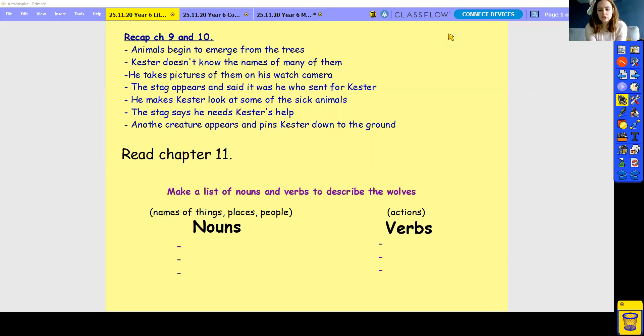So we're gonna have a look at chapter 11 today. As I'm reading today what you need to be doing is you need to be having a look for any nouns and verbs to describe the wolves. As I'm going I'll be describing some characters and some wolf characters. You need to write down any nouns, any names of things or places of people, and then a list of any verbs.